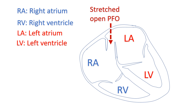If too much right atrial blood with lower oxygen content reaches the left atrium, the oxygen saturation in the blood vessels of the body can fall, leading to bluish discoloration of the skin.